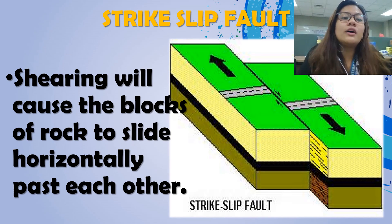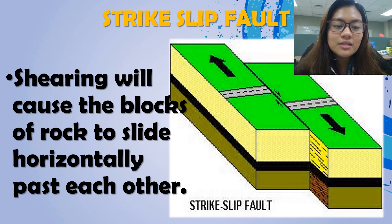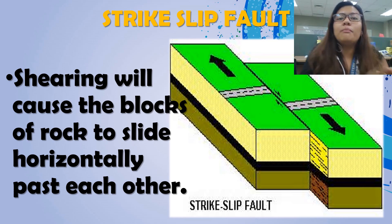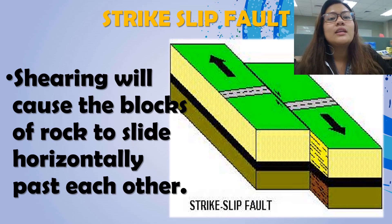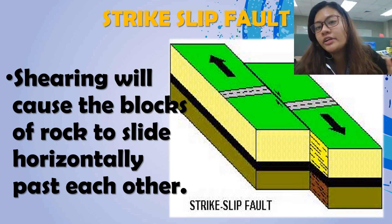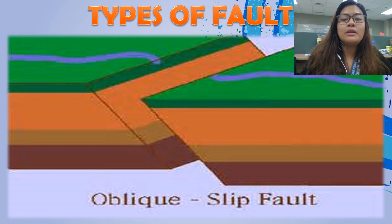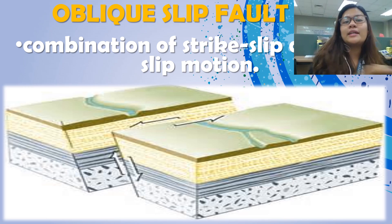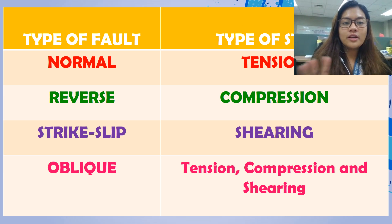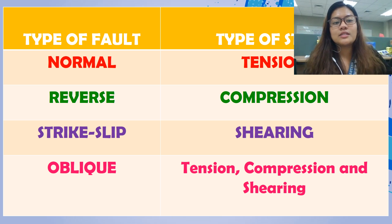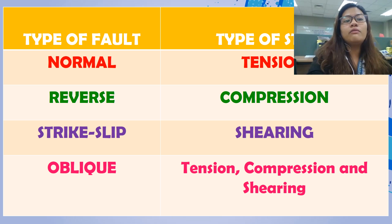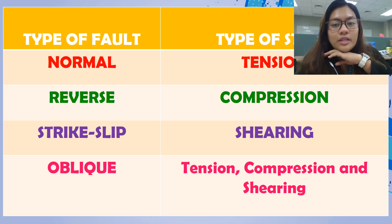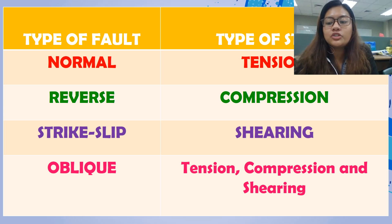The strike-slip fault: shearing will cause the blocks of rock to slide horizontally past each other. If you compare it to the transform boundary, it actually has the same movement in the shearing of the Earth's crust. Next, we have the oblique slip fault or the three-in-one fault — it's a combination of strike-slip and dip-slip motion. Here's a table of comparison: normal fault and reverse fault, which are dip-slip faults, involve tension and compression. Strike-slip involves shearing, and oblique involves tension, compression, and shearing.